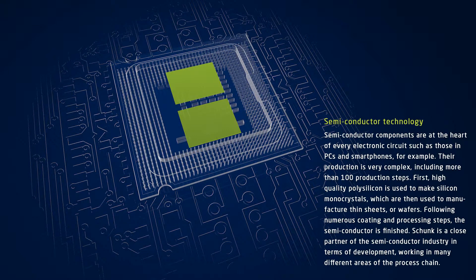First, polysilicon is used to make silicon monocrystals, which are then used to manufacture thin sheets or wafers. Thanks to the following numerous coating and processing steps, the finished semiconductor element has precisely defined properties. Schunk is a close partner of the semiconductor industry in terms of development, working in many different areas of the process chain.